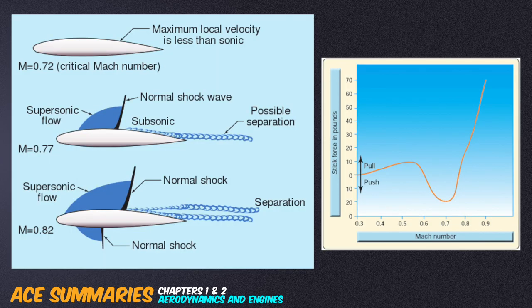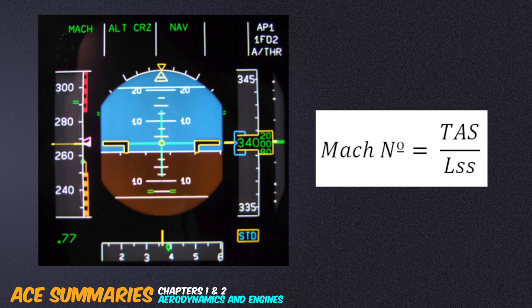Reaching critical mach, shock waves increase drag and create a shift from a stick push to a stick pull force required to maintain level flight, a nose down effect called mach tuck. Passing critical mach, there is a rearward shift in center of pressure. The speed margin of a jet aircraft is more significant due to the overspeed tendencies at low altitude of jet aircraft because of its huge power.